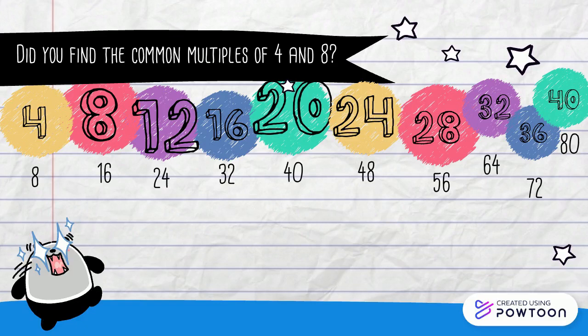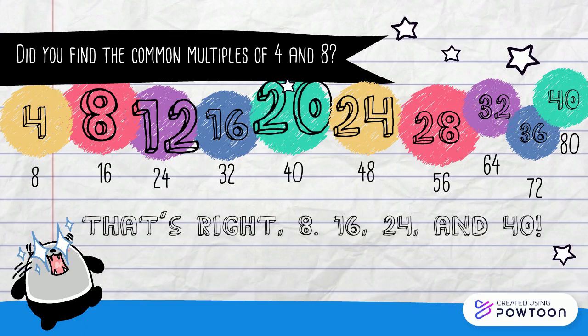That's right — 8, 16, 24, and 40 are common multiples of 4 and 8.